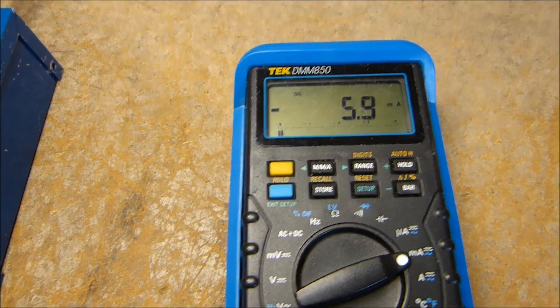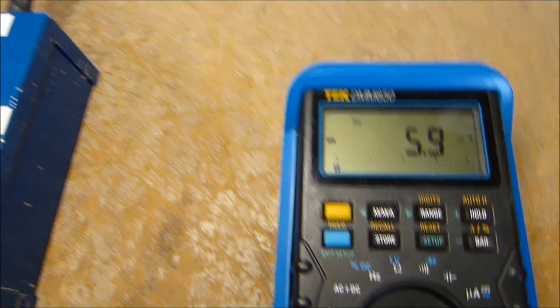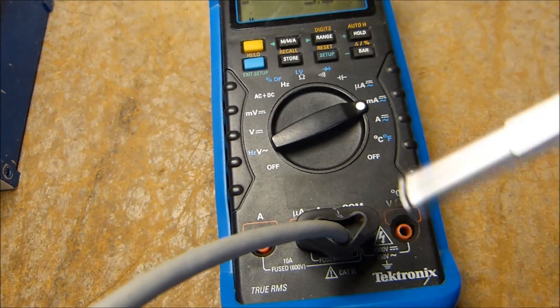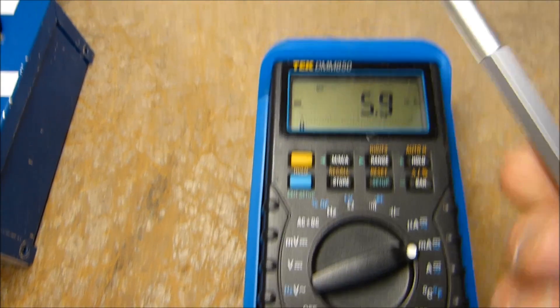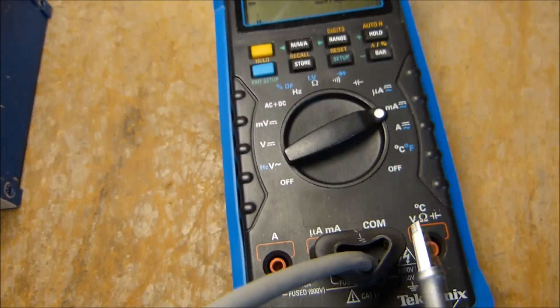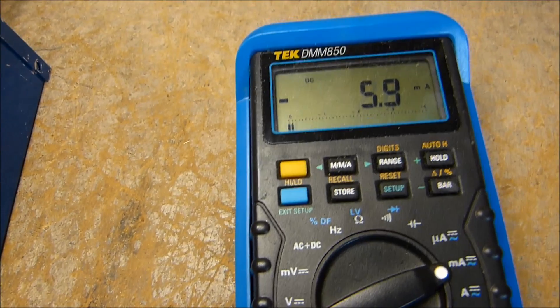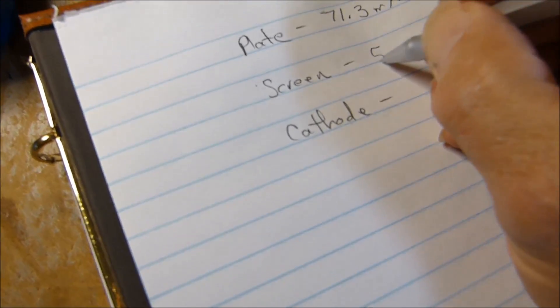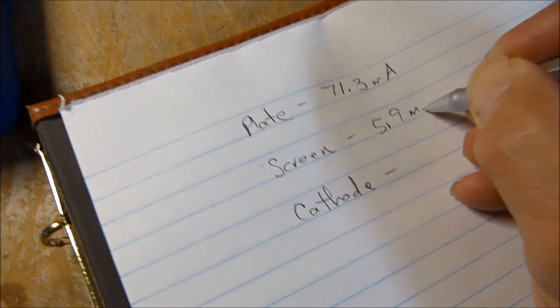There's our screen current. See it's measuring negative over here because that's just the way I've got it turned around. If you're using an analog meter, the meter would be going that way, so you'd have to turn this around. That's measuring 5.9 milliamps.